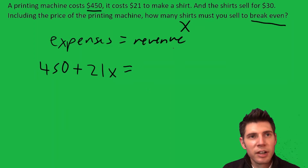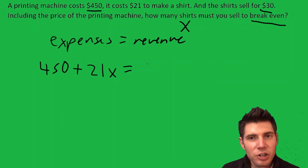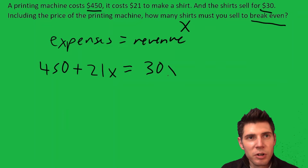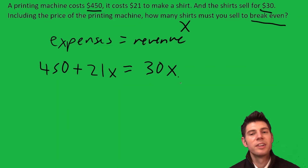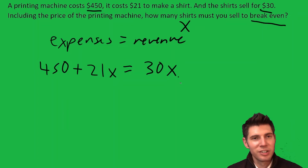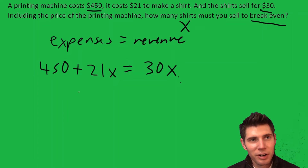The revenue is how much money we make. We get $30 for each shirt, so it's gonna be 30 times X, the number of shirts. So now we wanna know what is X — the number of shirts that will make these two things the same number.